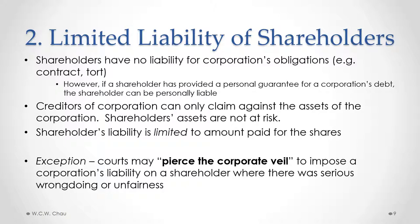There is an exception to this limited liability of shareholders. This is where a court may, what we call, pierce the corporate veil — to impose a corporation's liability on a shareholder and make the shareholder personally liable for a debt of the corporation. A court will only do this rarely, but where there is serious wrongdoing or unfairness, or in particular if there's some kind of fraud where the corporation is used to perpetrate the fraud, a court will ignore the fact that the corporation is a separate legal person and make the shareholder personally liable by piercing the corporate veil.